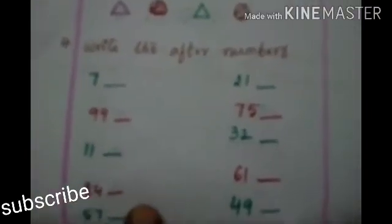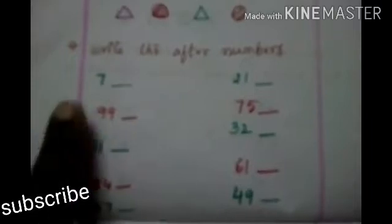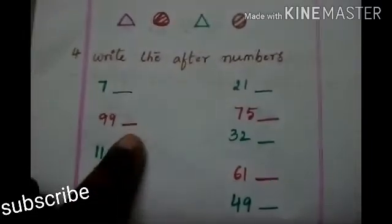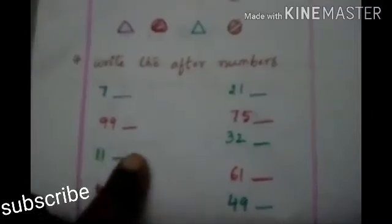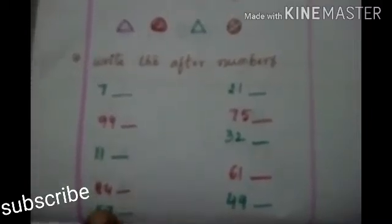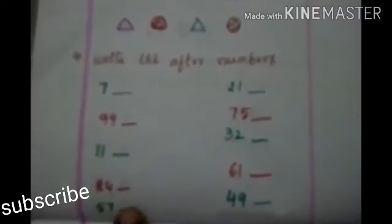Write the after numbers. After number means which come down — the number line is there. Below numbers we have to write. After 7? It is 8. After 99? It is 100. 11? 12. 84? 85. 57? 58.